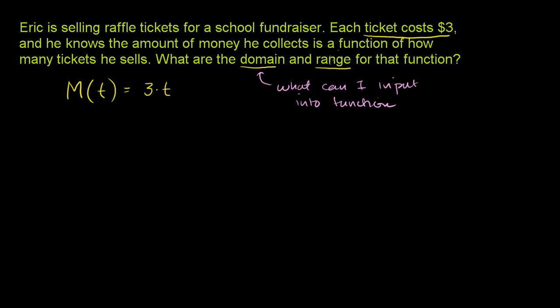The range is, what are the possible values that the function can take on? Think about it. You might at first say, I could put any T there. But think about the actual reality of what he's doing. He is selling tickets, so we can't sell negative tickets. He might sell zero tickets, and he might sell a gazillion tickets.